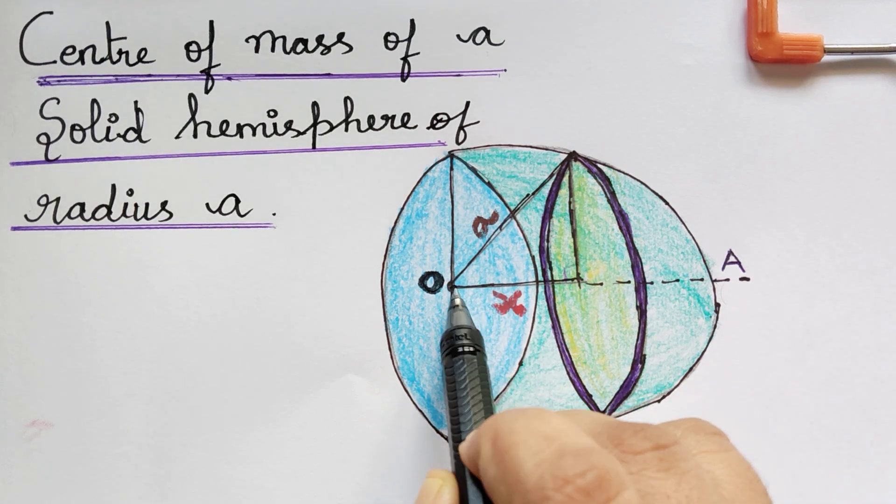Now we will see the assumptions one by one. The first is: we take point O as the center of the sphere, and therefore it is also the center of the hemisphere. The line OA is the middle radius, taken as the x-axis. Here, a is the radius of the solid hemisphere, and rho (ρ) is the mass per unit volume — that is, for one unit of volume, the mass is taken as ρ.